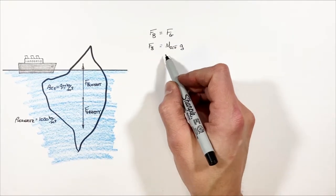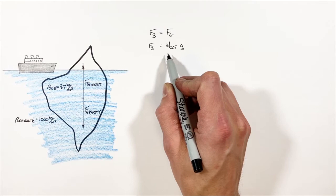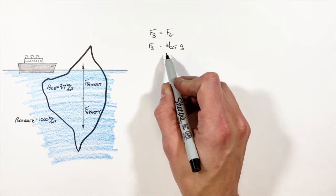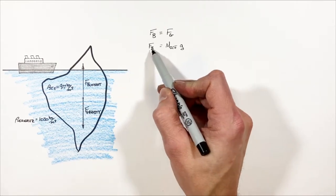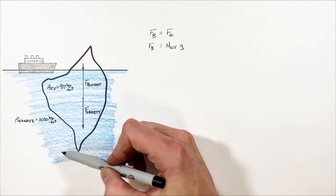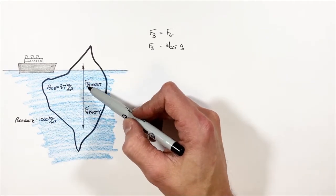Now we've reached the key to the entire problem, and that is Archimedes' principle. Archimedes' principle says that the buoyant force which acts on any object is equal to the weight of fluid which it displaces.